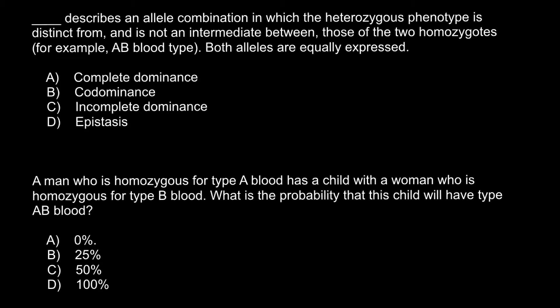Choose the correct expression that describes an allele combination in which the heterozygous phenotype is distinct from and is not an intermediate between those of the two homozygotes. For example, capital A capital B blood type — both alleles are equally expressed. The four answer choices are: A) complete dominance, B) co-dominance, C) incomplete dominance, and D) epistasis.